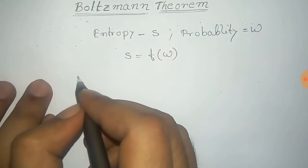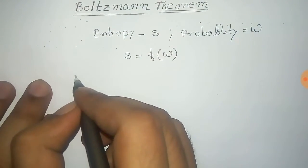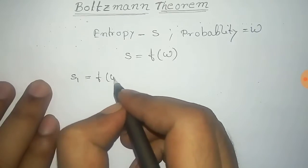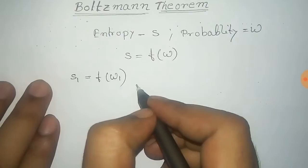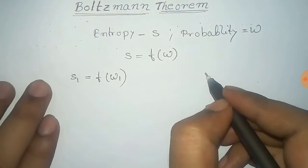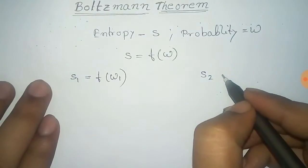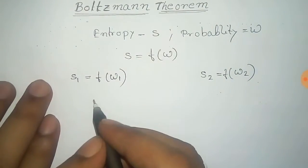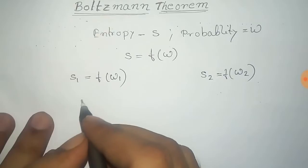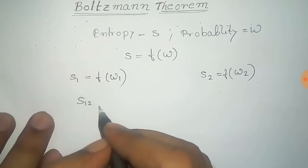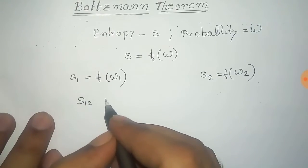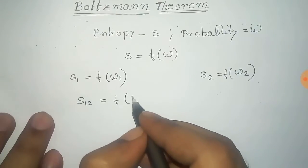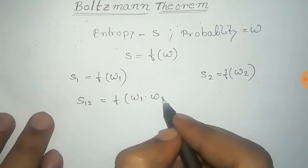If you take a system with entropy S1 and probability Omega1, then S1 equals f(Omega1). For another system with entropy S2 and probability Omega2, S2 equals f(Omega2). Now if we combine these two systems, we get a new system with entropy S12 equal to a function of the product Omega1 times Omega2.